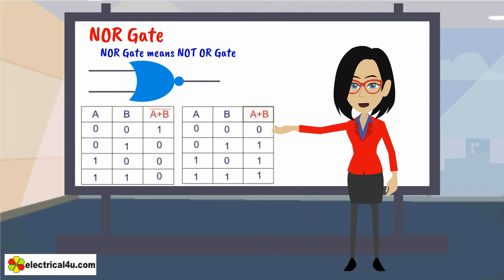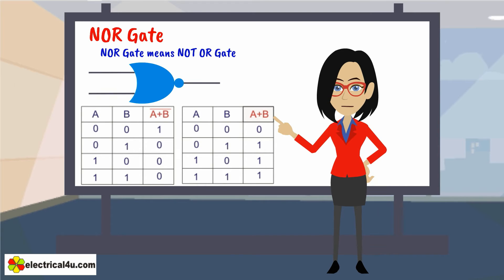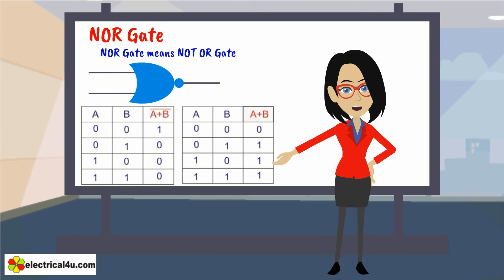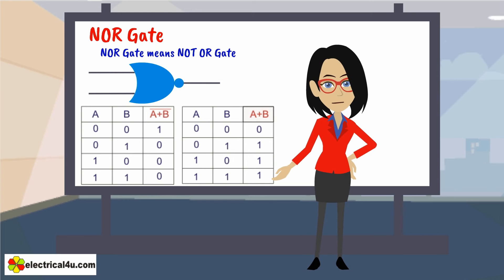It is just the reverse of the OR gate truth table, where the output is A plus B. When A and B both are 0, the output is 0. When A is 0 and B is 1, the output is 1. When A is 1 and B is 0, the output is 1. And when both A and B are 1, the output is 1.